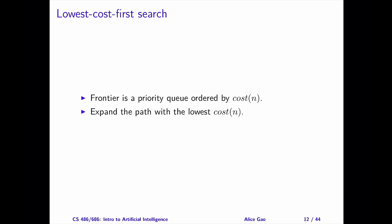LCFS maintains a frontier, which is a priority queue ordered by the path costs. It always selects the path with the lowest total cost to remove from the frontier. You may have learned the Dijkstra's shortest path algorithm, which is similar to LCFS.